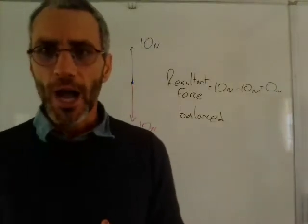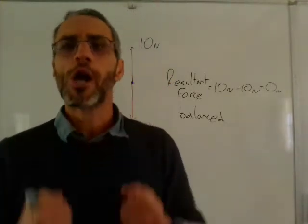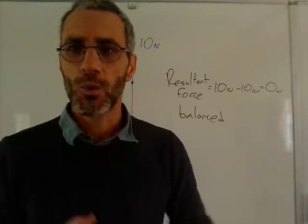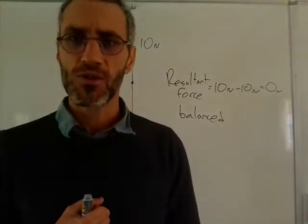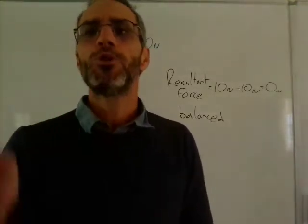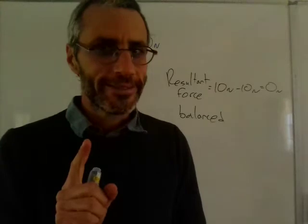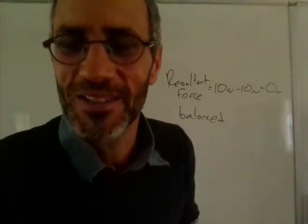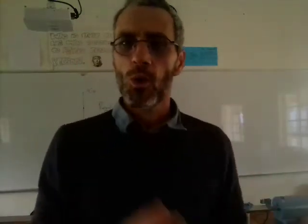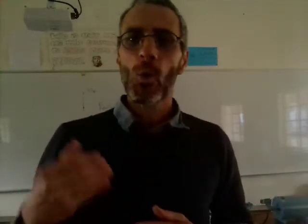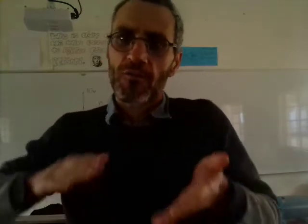So my question now is: what happens to this object? How would you describe the motion of this object where the resultant force is zero? When I ask this, most students will say the object will be stationary — it's not going to be moving. But that's not exactly the right answer. The reason students think that is that we are living in a world dominated by friction. You know what a friction force is — it's the force opposing the motion.